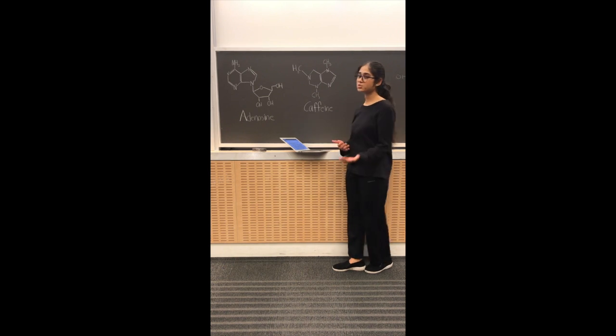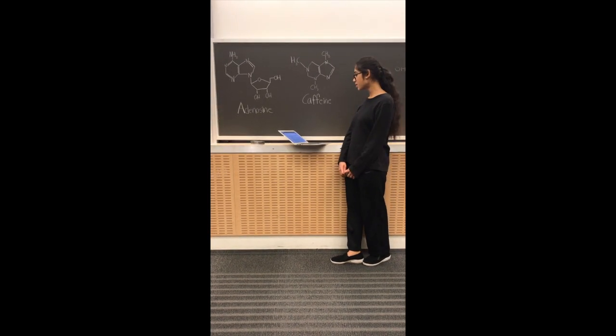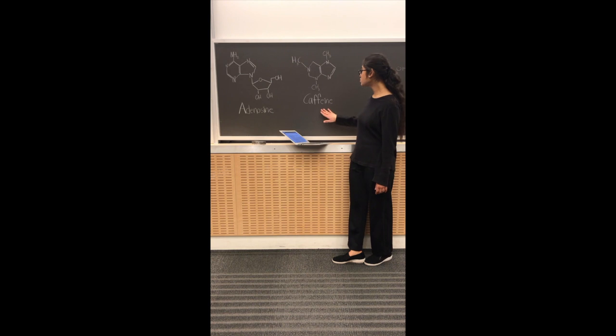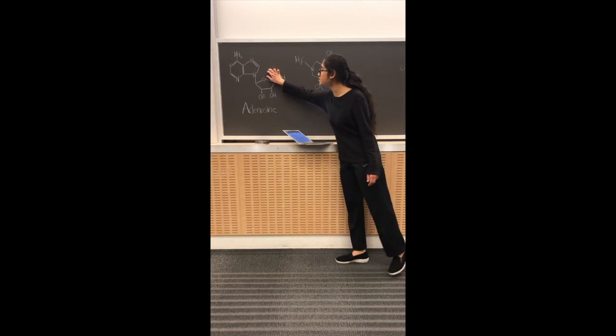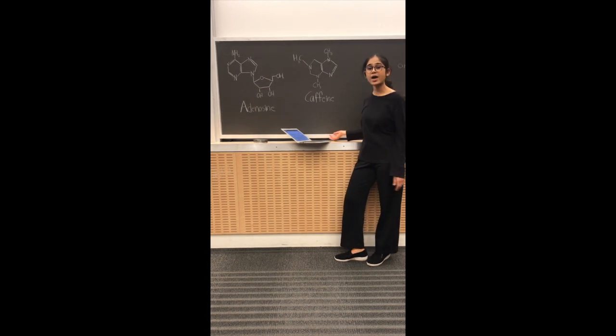Caffeine is obviously the most heard of non-volatile alkaloids that are present in coffee. As you can see, the structure of caffeine is actually quite similar to the structure of adenosine and this allows it to act as a competitive inhibitor.